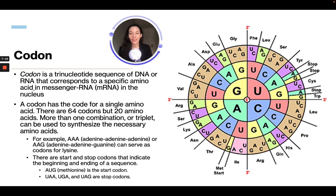For example, AAA (adenine-adenine-adenine) or AAG (adenine-adenine-guanine) can both serve as a codon for lysine. There are start and stop codons that indicate the beginning and end of a sequence. AUG, known as methionine, is a start codon, while UAA, UGA, and UAG are stop codons.